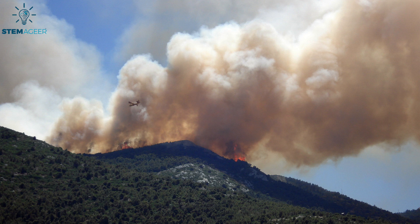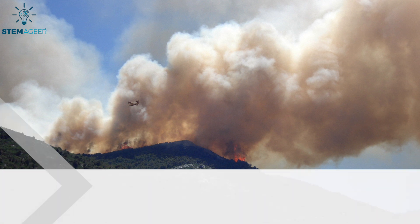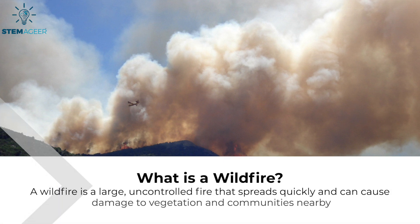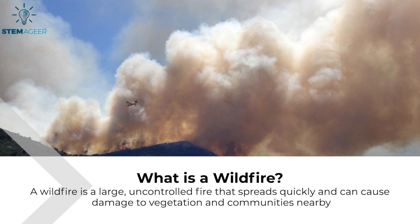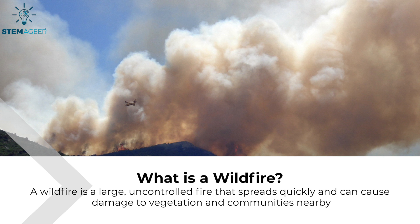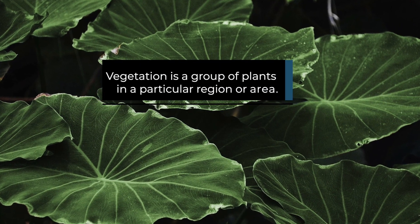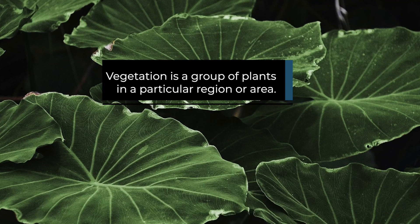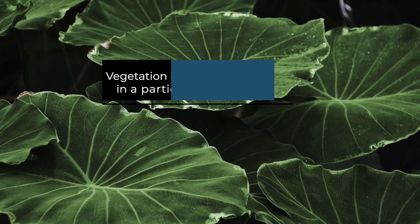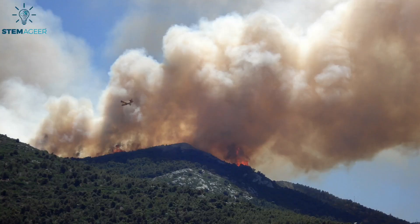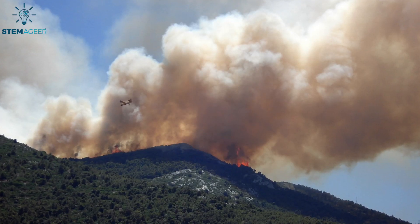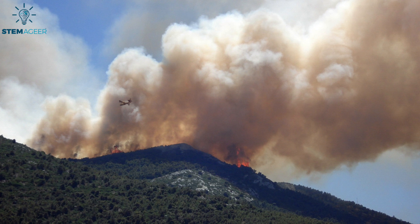So what exactly is a wildfire? A wildfire is a large, uncontrolled fire that spreads quickly and can cause damage to vegetation and communities nearby. Vegetation is a fancy word for a group of plants in a particular region or area. Usually, when wildfires start, people may not know about them until they become really large.